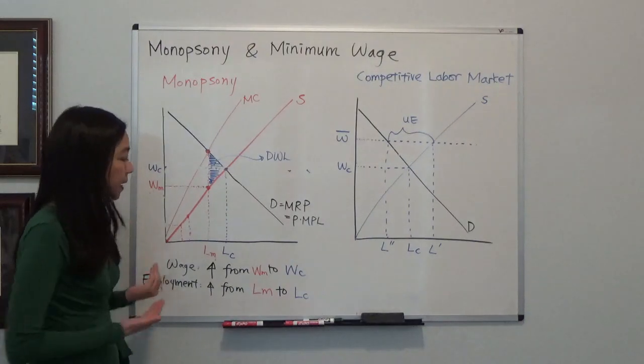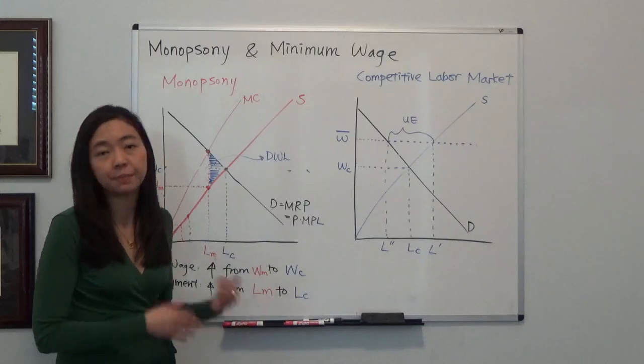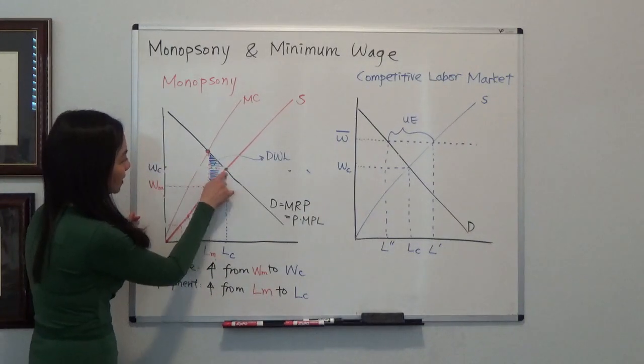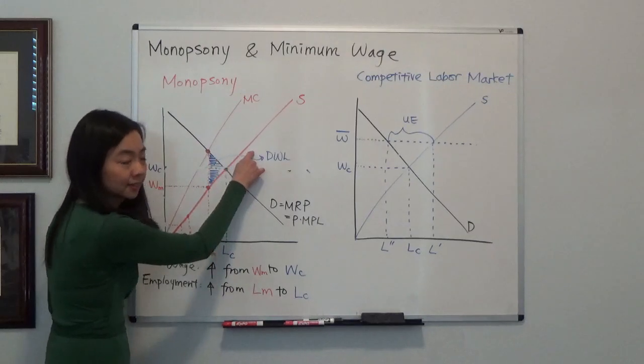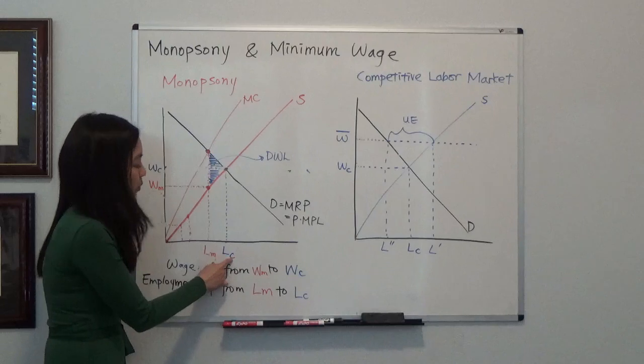So they will be paying a wage that is lower than the value the worker provides to the company. And notice that compared to a competitive market where we have many employers and many employees, the competitive wage will be WC. That's where demand and supply intersect. And the employment will be LC. So LC people will be hired.